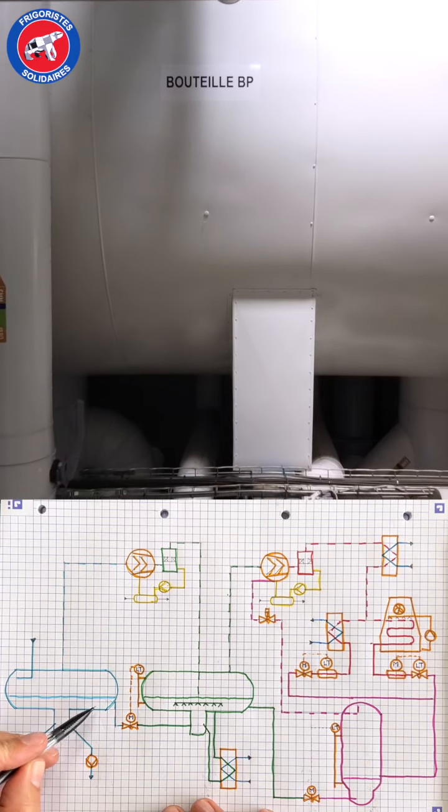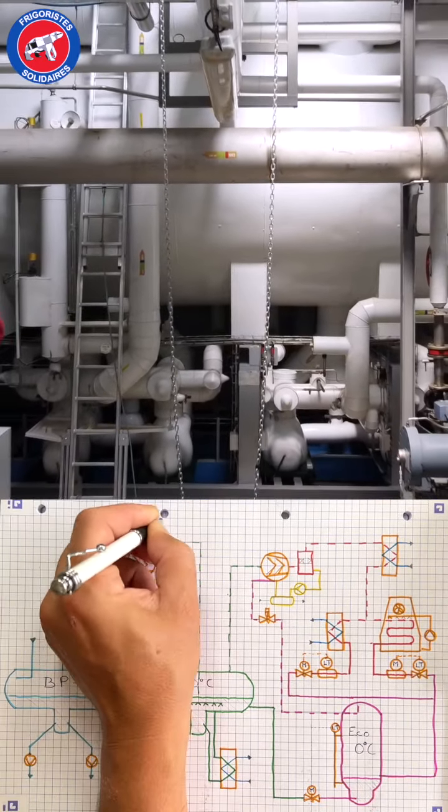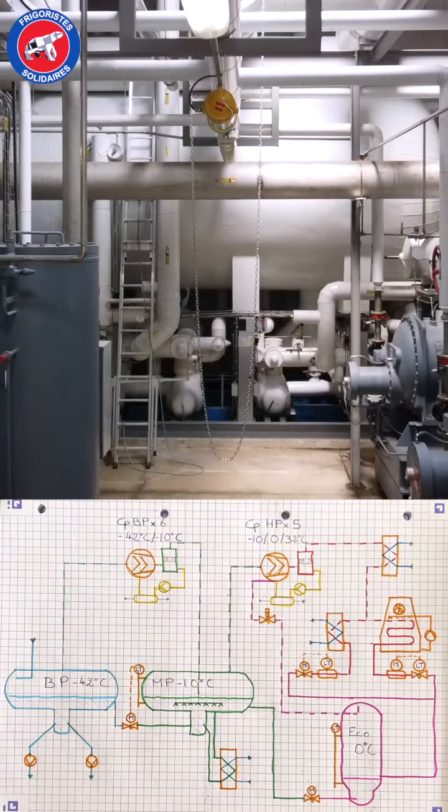With a volume of 48 cubic meters, a low pressure liquid separator can store the 12 tons of ammonia contained in the installation.